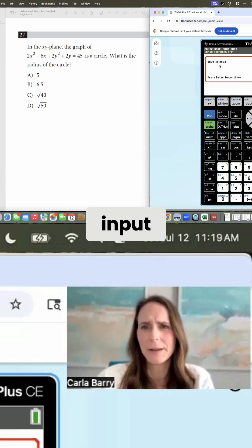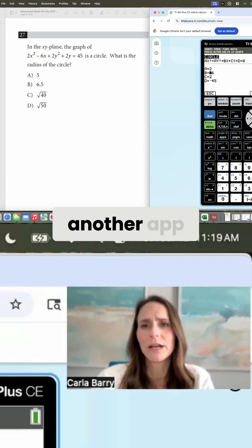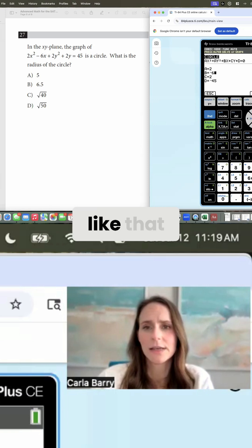Oh, do you see how it says invalid input? If you ever get an invalid input error message, either in the conics app or in another app, you probably use the wrong negative symbol. So we're going to use the negative 6, like that.